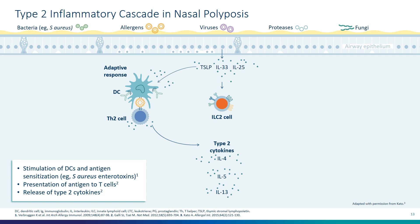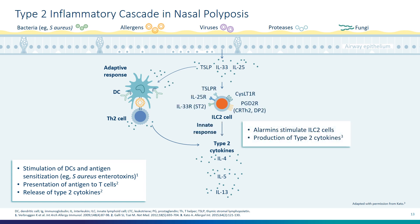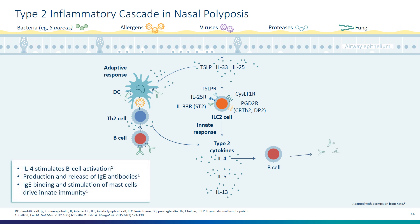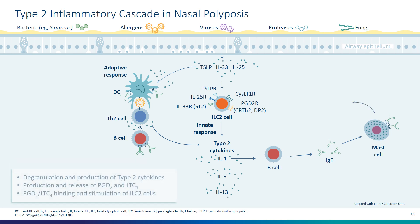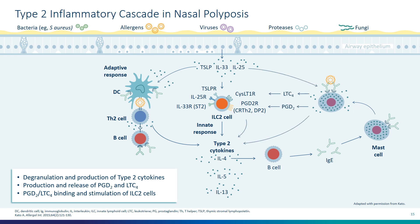In some instances, alarmins activate the ILC2 subset of T cells — this is the innate response — again secreting IL-4, IL-5, and IL-13. IL-4 can cause B cell class switching to secrete IgE. The IgE plays a central role in the activation of mast cells and basophils. The mast cell can secrete leukotrienes and prostaglandins that can cross-talk to the ILC2 pathway. You can see how these pathways are interrelated and can have a feed-forward or feed-backward response.